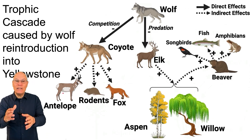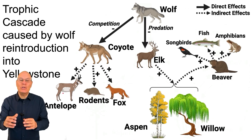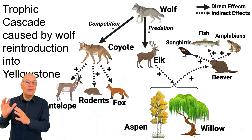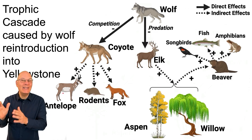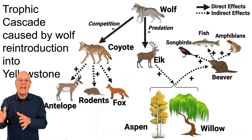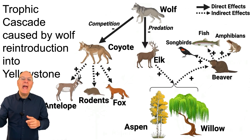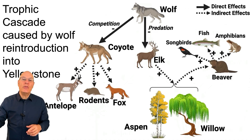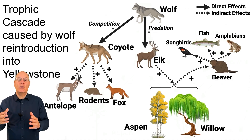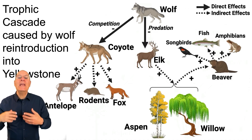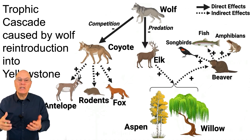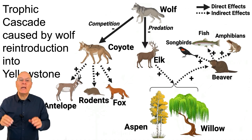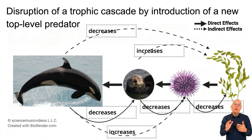The main thing for you as an AP Biology student is to be able to interpret a diagram like this and to know the basic idea, which is that the reintroduction of a keystone species increases biodiversity through a trophic cascade effect.